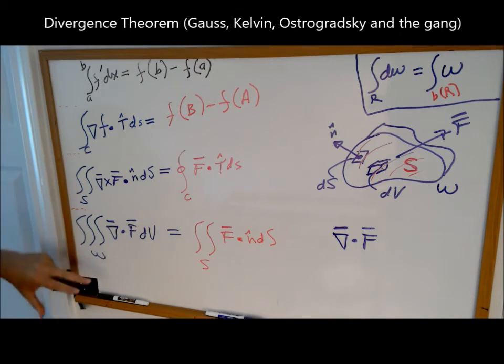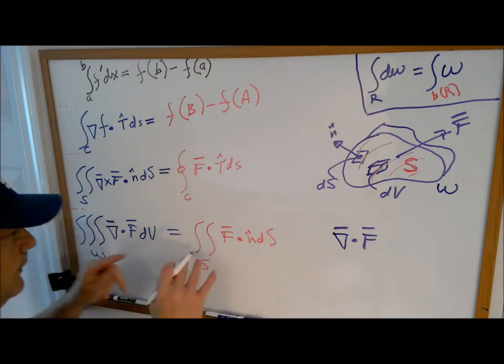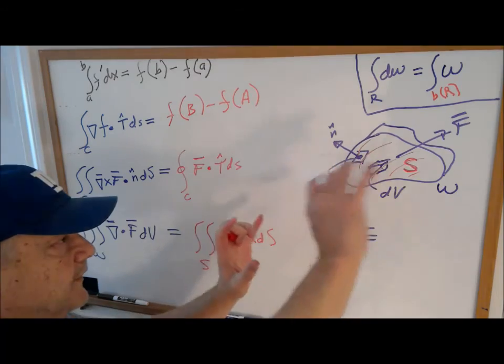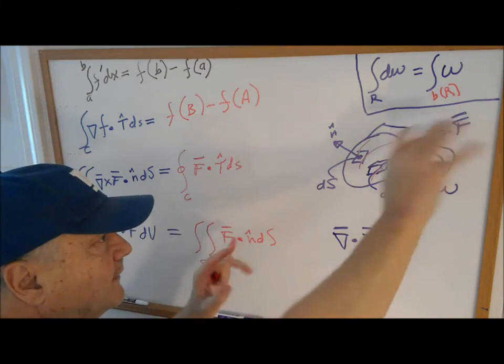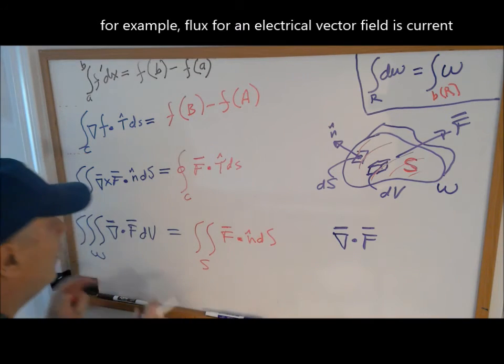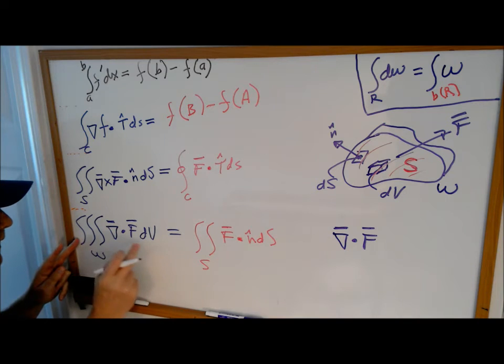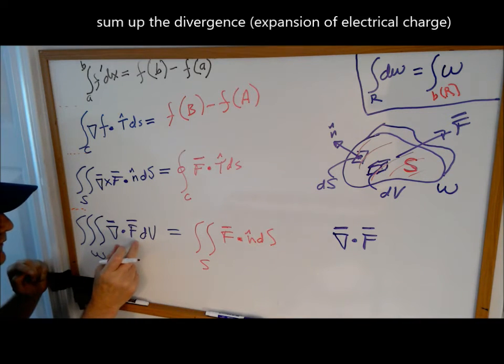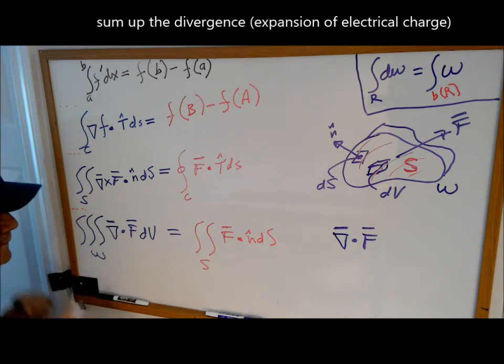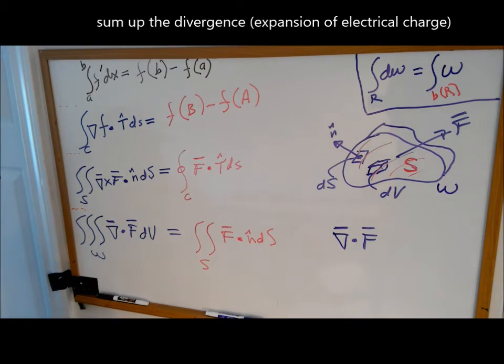This one, for example, says if you want to know what's going on here at the surface with respect to some kind of vector field, if you want to know this answer, go inside of that solid and measure how things are diverging, how they're changing, and add them up.